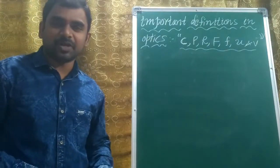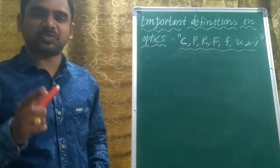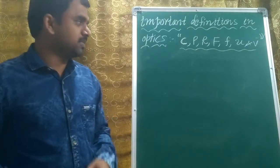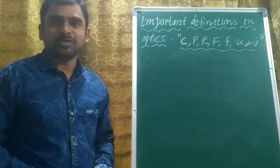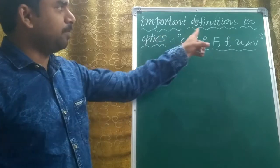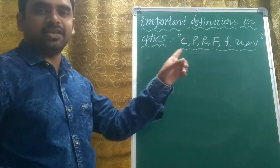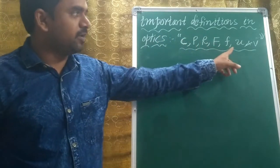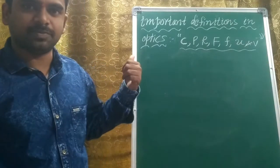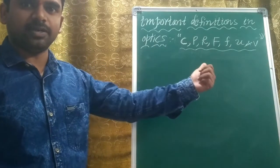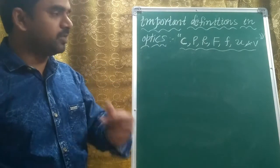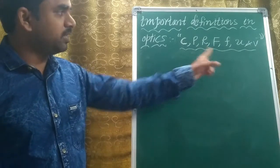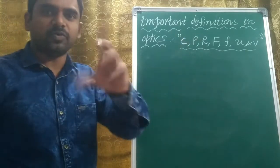Hi friends, welcome to my channel Physics Guna. Please subscribe to the channel. Today our topic is important definitions in optics: C, P, R, F, F, U, and V. What are those? These are very important. Within a fraction of seconds I would like to explain this.